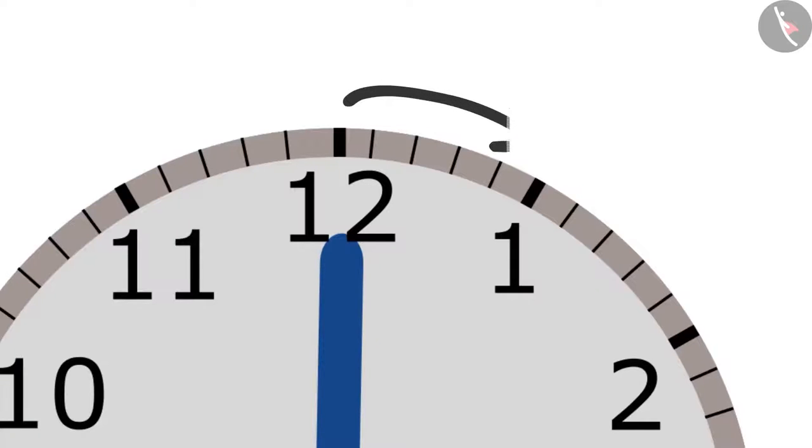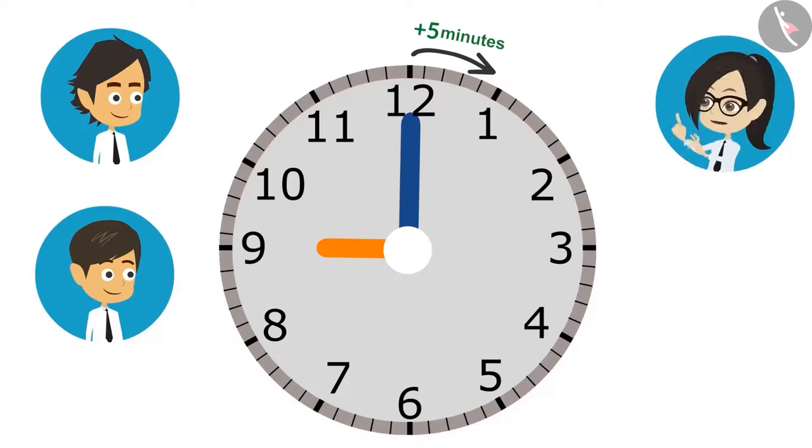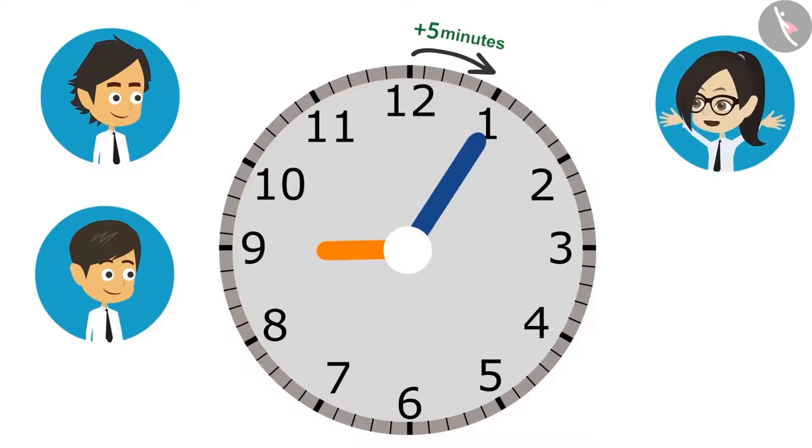The minute hand takes 5 minutes to go from one number to another. That's why when the minute hand moves from 12 to 1, then it is not 1 minute, but 5 minutes.